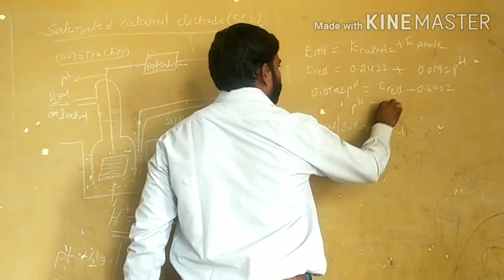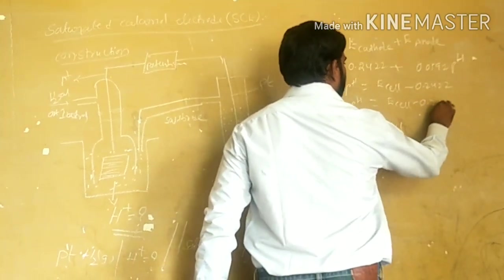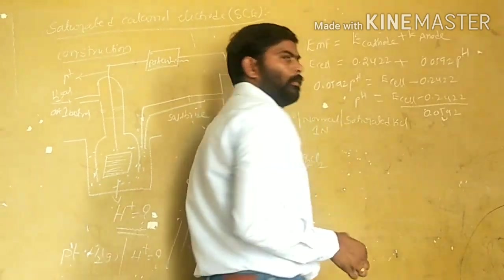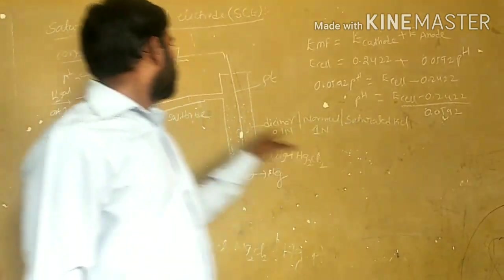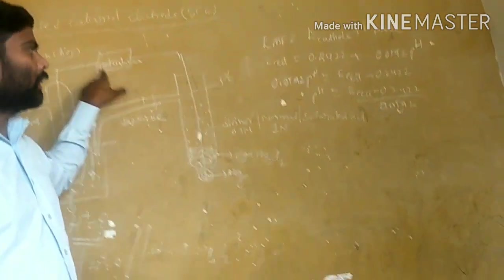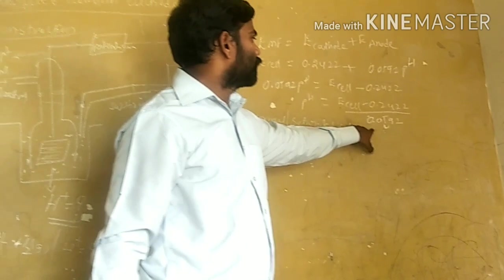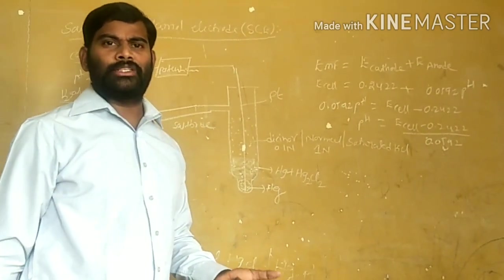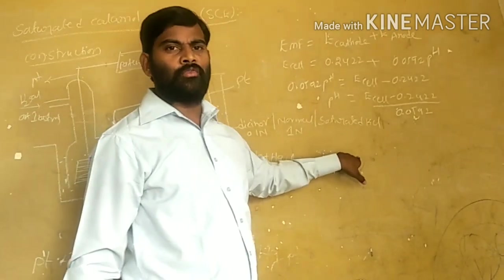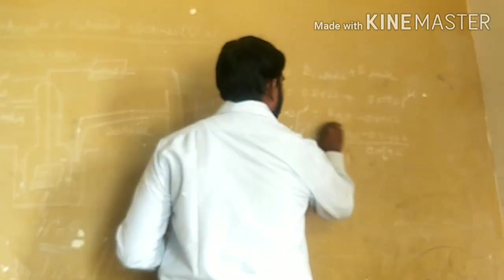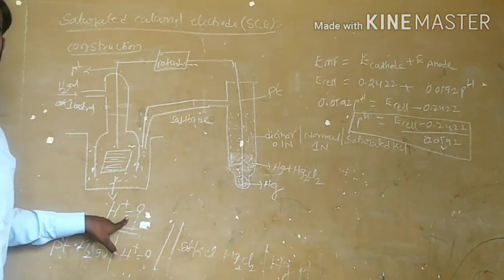Therefore, E_cell = 0.2422 + 0.0592 × pH. Rearranging: 0.0592 × pH = E_cell − 0.2422. So pH = (E_cell − 0.2422) / 0.0592. Here, E_cell is the potentiometer reading — a known value. The constants are known, so we calculate the pH. Once we know the pH, which is the negative logarithm of H⁺ concentration, we can find the H⁺ ion concentration and thus the concentration of the unknown solution.